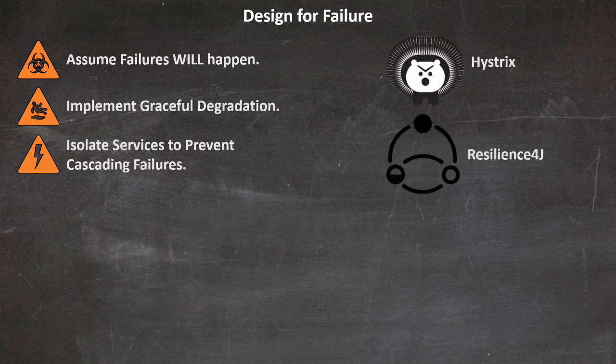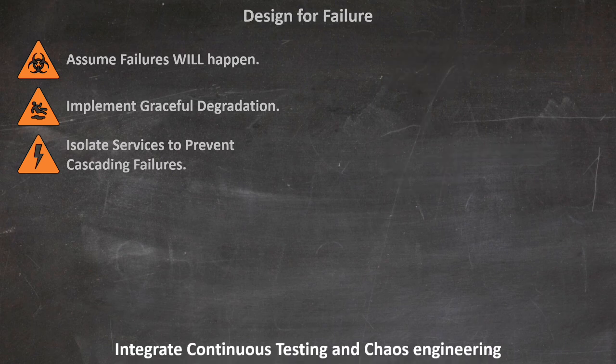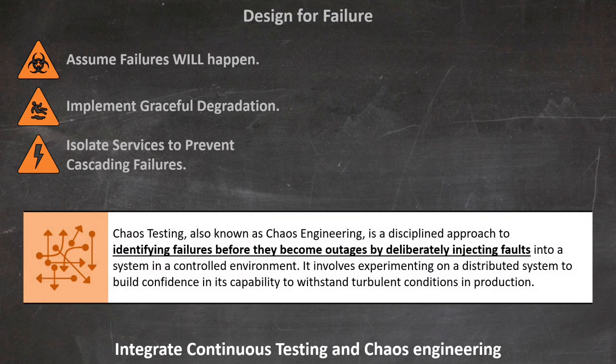Tools like Hystrix or Resilience4J can assist in implementing these patterns. By proactively designing your architecture with these strategies in mind, you can significantly enhance the resilience of your microservices. Second, embrace continuous testing and chaos engineering. Regular testing helps identify vulnerabilities, while chaos engineering simulates failures to ensure your system can withstand unexpected issues. We covered chaos engineering in depth in our earlier video on testing — check it out for a deeper dive. By incorporating these practices, you'll be well on your way to creating truly resilient microservices.